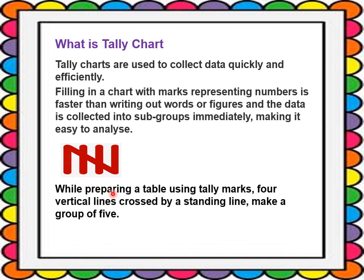While preparing a table using tally marks, four vertical lines crossed by a diagonal standing line make a group of five. So one, two, three, four vertical lines crossed by a standing line — this indicates five.